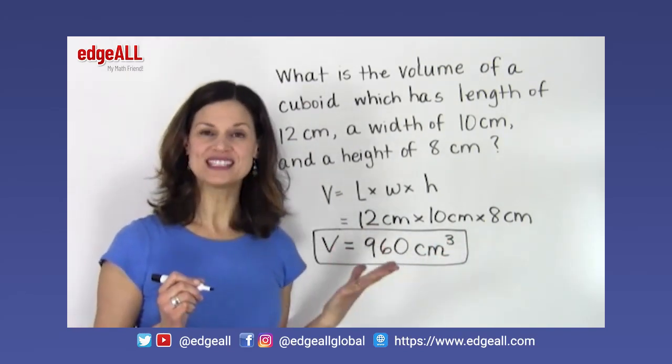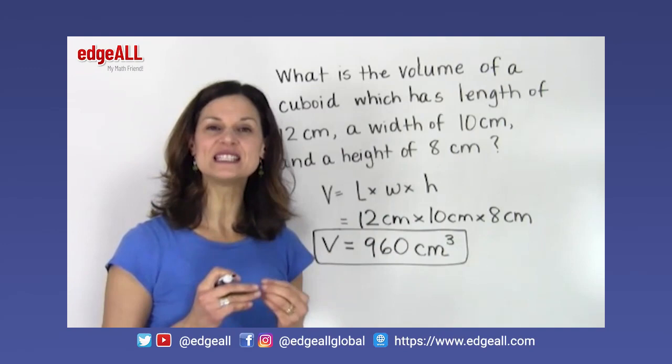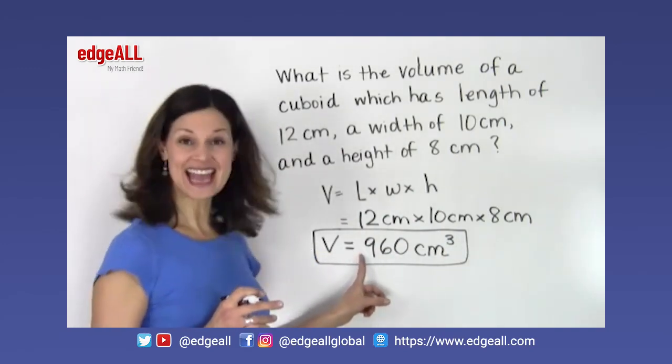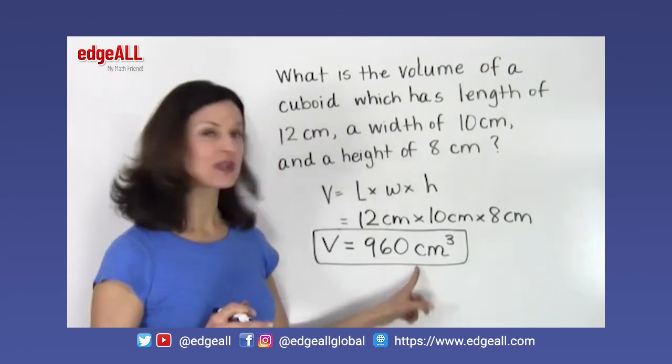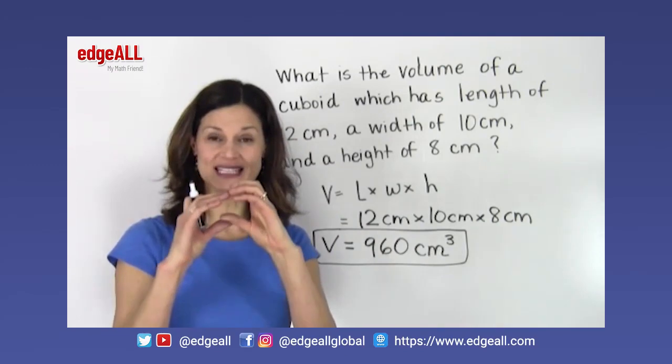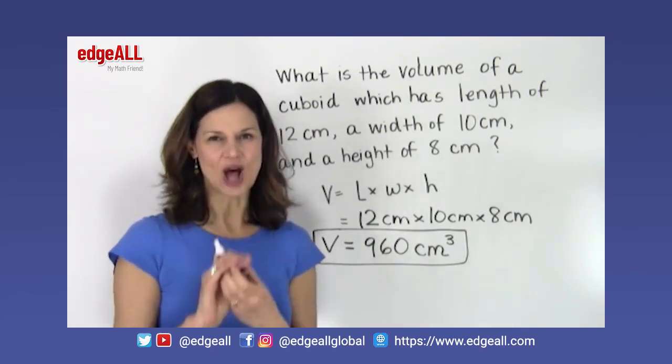We can also say that there is enough space in this solid shape to fit 960, 1 by 1 by 1 centimeter cubes, so a 1 centimeter cubed solid.